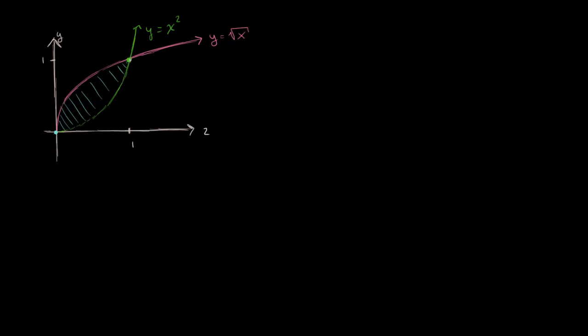One way to do it is to think about what's the area between y equals square root of x and the x-axis. So we're going from 0 to 1. This is the area under square root of x from 0 to 1 dx. So this is literally denoting this entire region right over here all the way up to this boundary point, so this entire region.